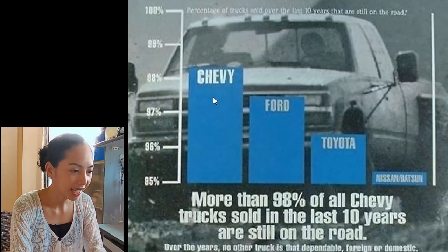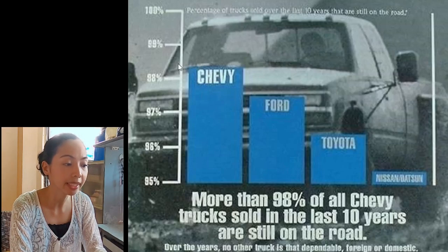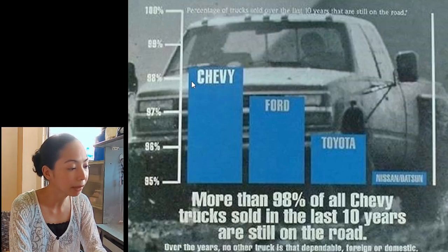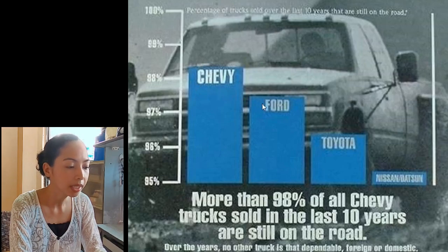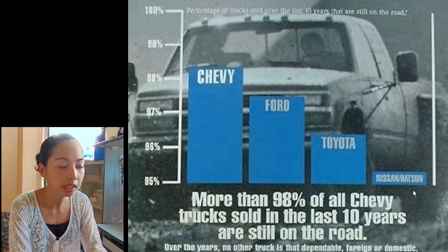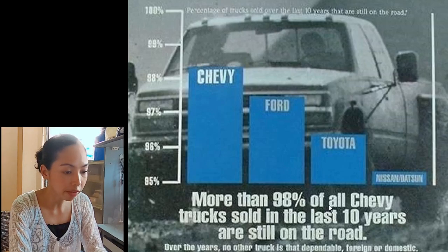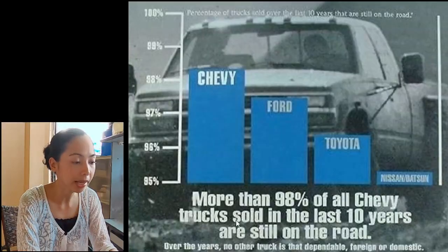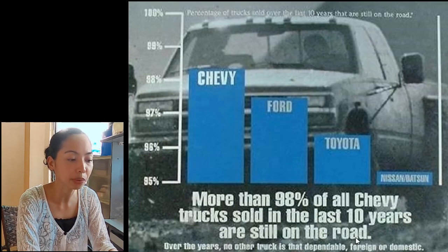Anong mapapansin nyo sa graph na to? This is actually a Chevy advertisement in the past na kin-claim nila na superior sila sa ibang brands ng trucks, kasi ito yung comparison ng mga trucks ng bawat brands na over 10 years old pero nasa daan pa. You can see na Chevy yung may highest percentage. Now, tama naman yung mga numbers and yung mga labels, pero the way na pinresent yung graph na to is misleading.